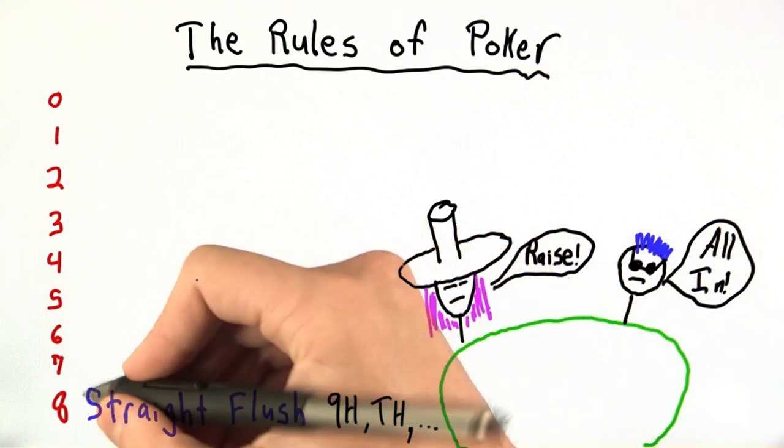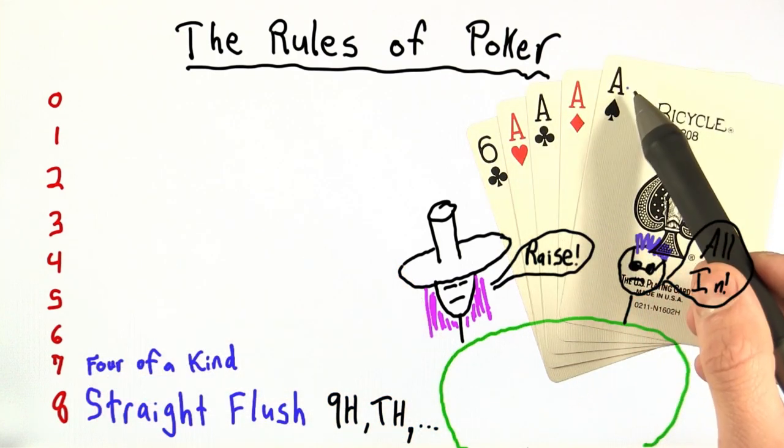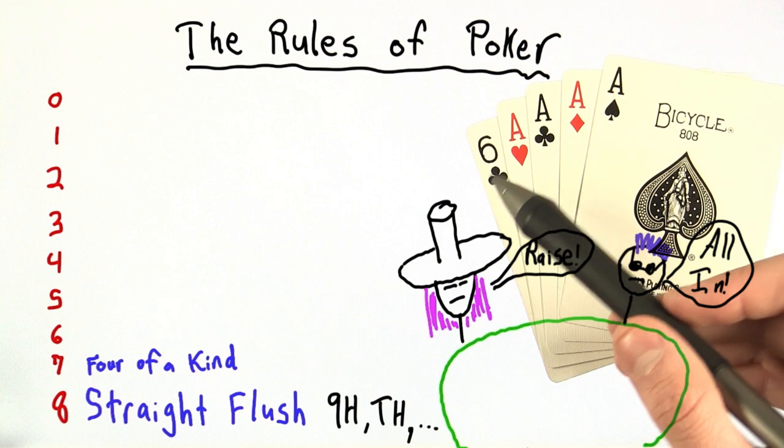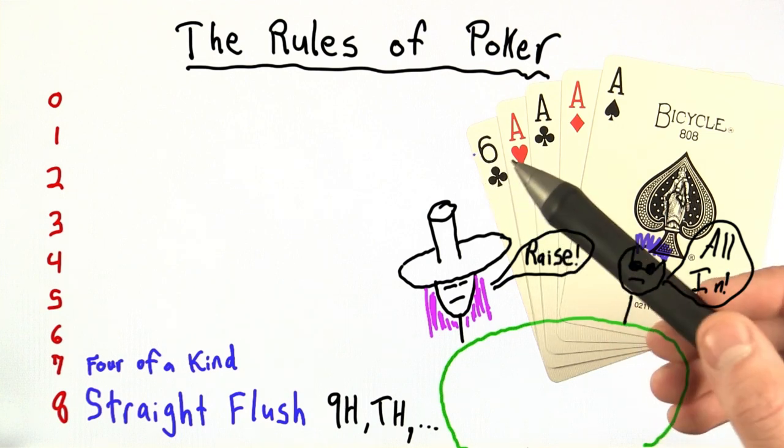The next best hand is four of a kind. And here we have a four of a kind with four aces and a six. The six is usually irrelevant to this hand, but we'll talk a little bit about how to break ties in class.